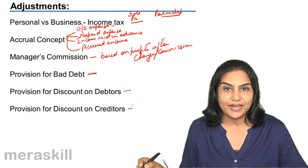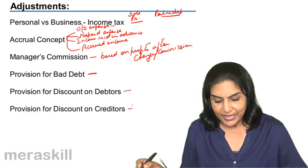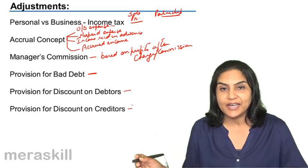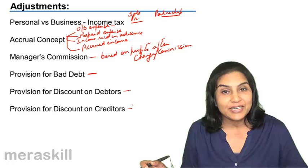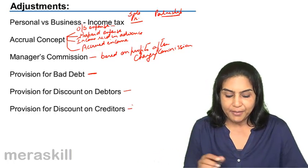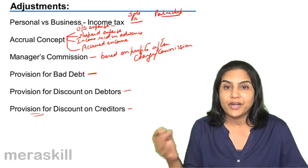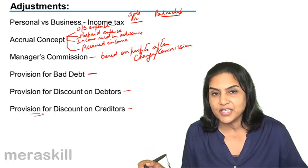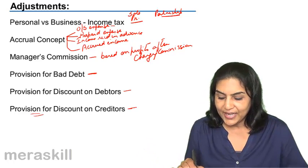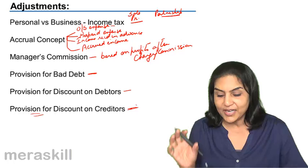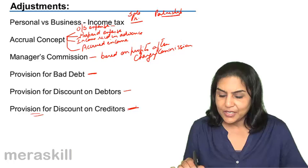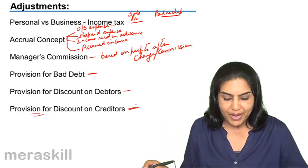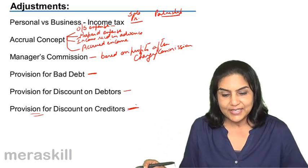Discount on creditors is actually an income. We are talking about the discount received. To create a provision for an income which may arise in future is slightly against the accounting principle of conservatism. Nevertheless, such a practice had existed for some time and we will discuss the same.